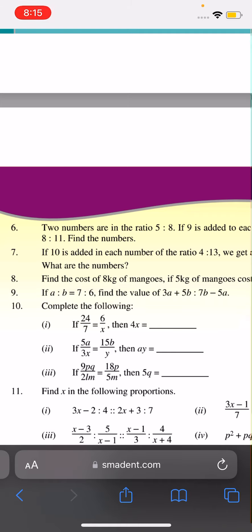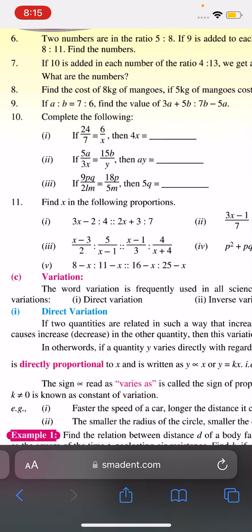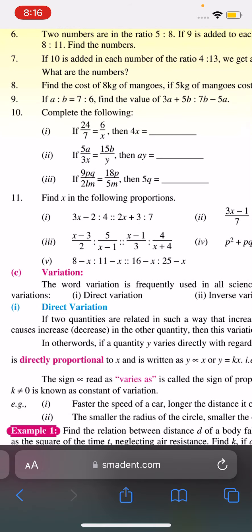If 9pq over 21m is equal to 18p over m, then 5q is equal to... We have not given the answer for the 11th. We will have 3x minus 2 ratio 4, or 2x plus 3 ratio 7.